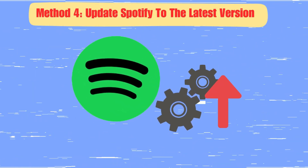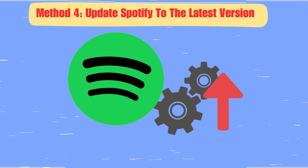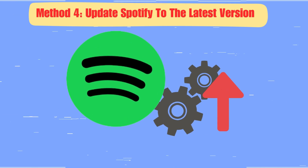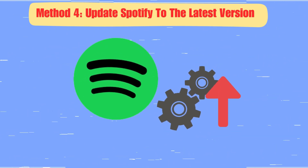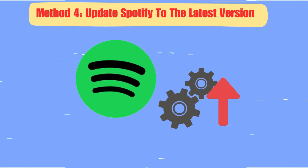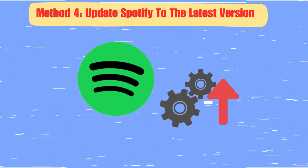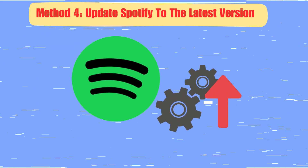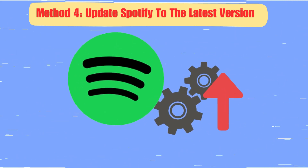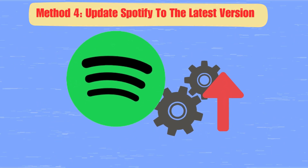Method 4: Update Spotify to the latest version. Spotify developers keep enhancing the app's performance by releasing new versions. When you discover greyed out songs on Spotify, you can upgrade the app accordingly.